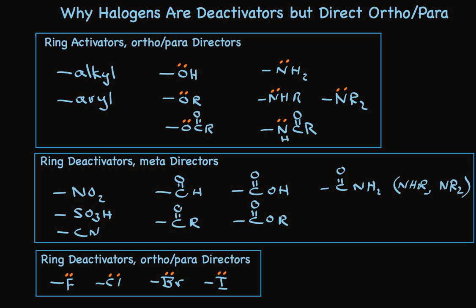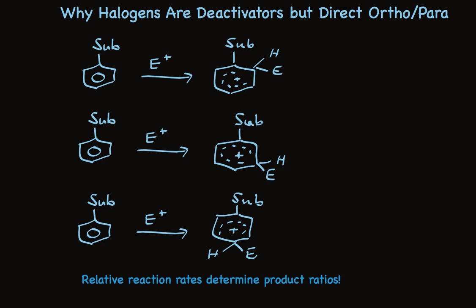We need to take a closer look at that to understand why this results in ortho para direction. I've shown the three possibilities: substitution at ortho, meta, and para positions. The relative rates of these three reactions will determine the product ratios.